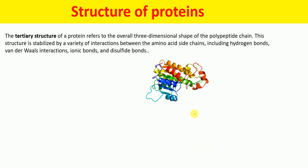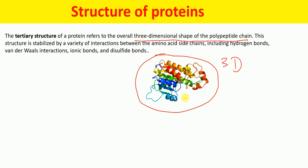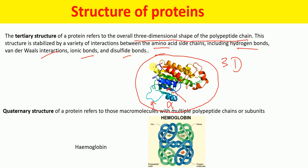Now let's talk about the tertiary structure of the protein. The tertiary structure refers to the overall three-dimensional shape of the polypeptide chain. In the tertiary structure, as shown, we have the alpha helix, the primary structure amino acid sequence, and the beta pleated sheet. This overall three-dimensional shape of a single polypeptide chain is called the tertiary structure. It is stabilized by a variety of interactions between amino acid side chains, including hydrogen bonds, van der Waals interactions, ionic bonds, and disulfide bonds. The hydrophobic core is present inside, while the hydrophilic part is on the outer side.